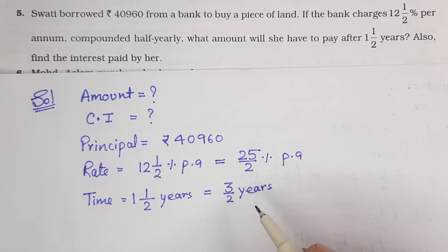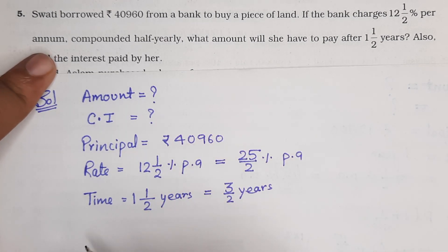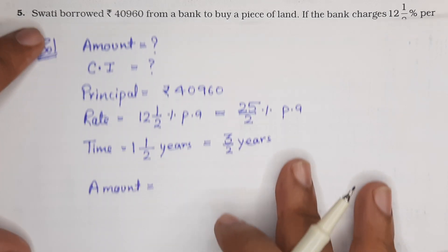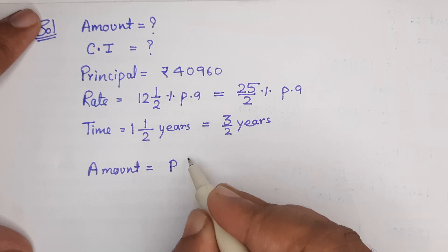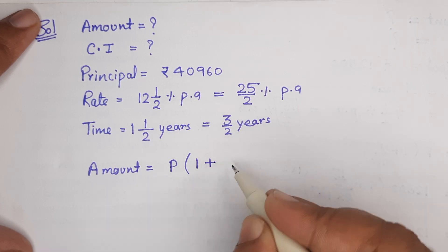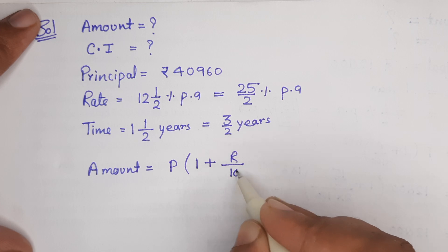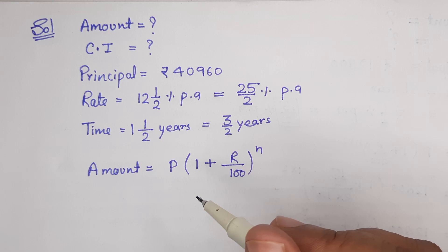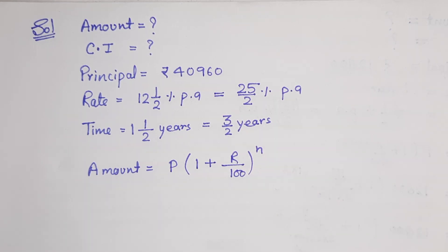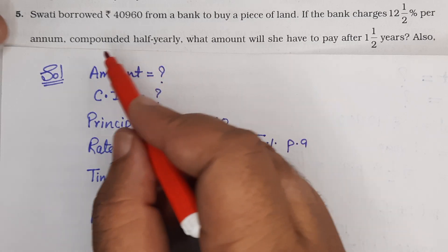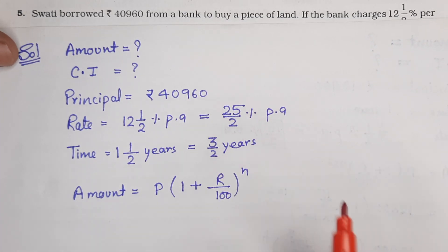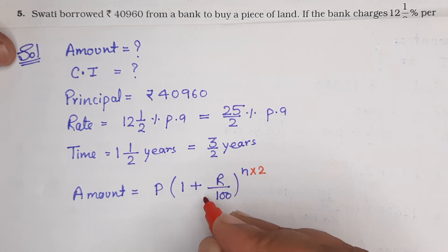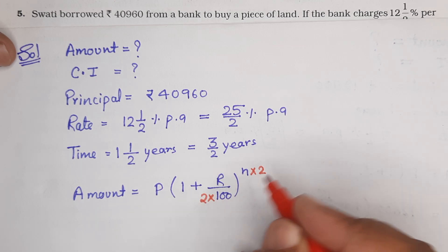सबसे पहले निकालना था amount। Amount का formula है: A = P(1 + r/100)^n — यह amount का formula आपने पिछली exercise में सीखा था। लेकिन यहां पर इस question में लिखा है compounded half-yearly। जब भी half-yearly हो, तो n को 2 से multiply करेंगे और rate को 2 से divide — यानी 100 को 2 से multiply। ऐसे आपको 2 लिख देना है दोनों side।